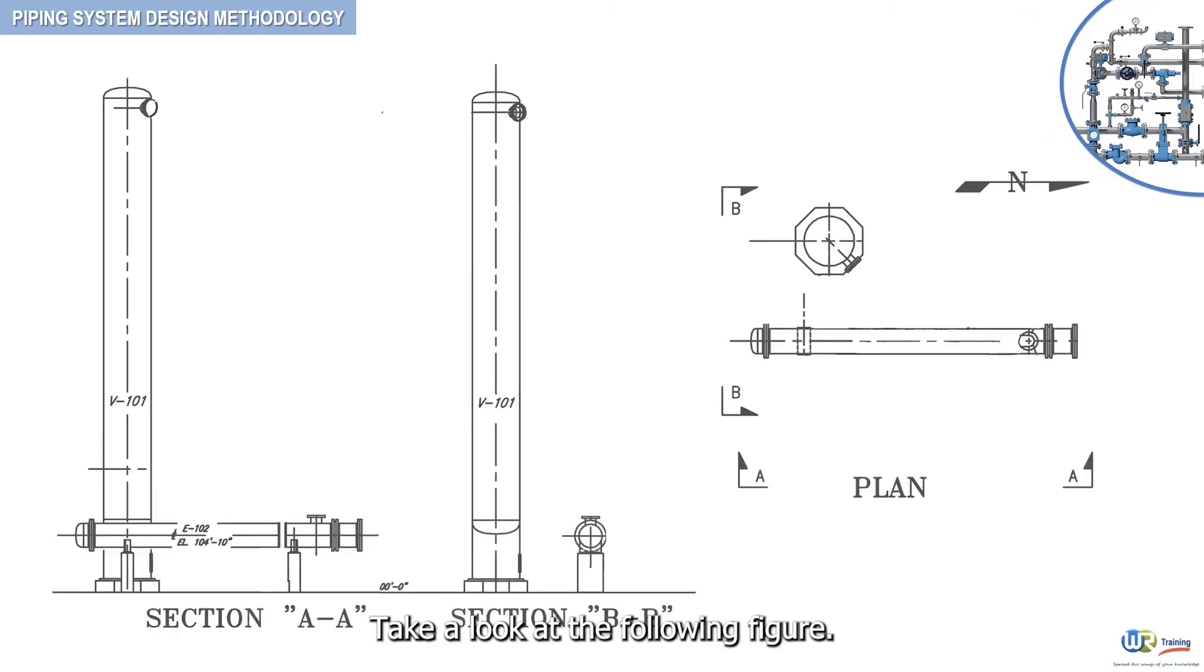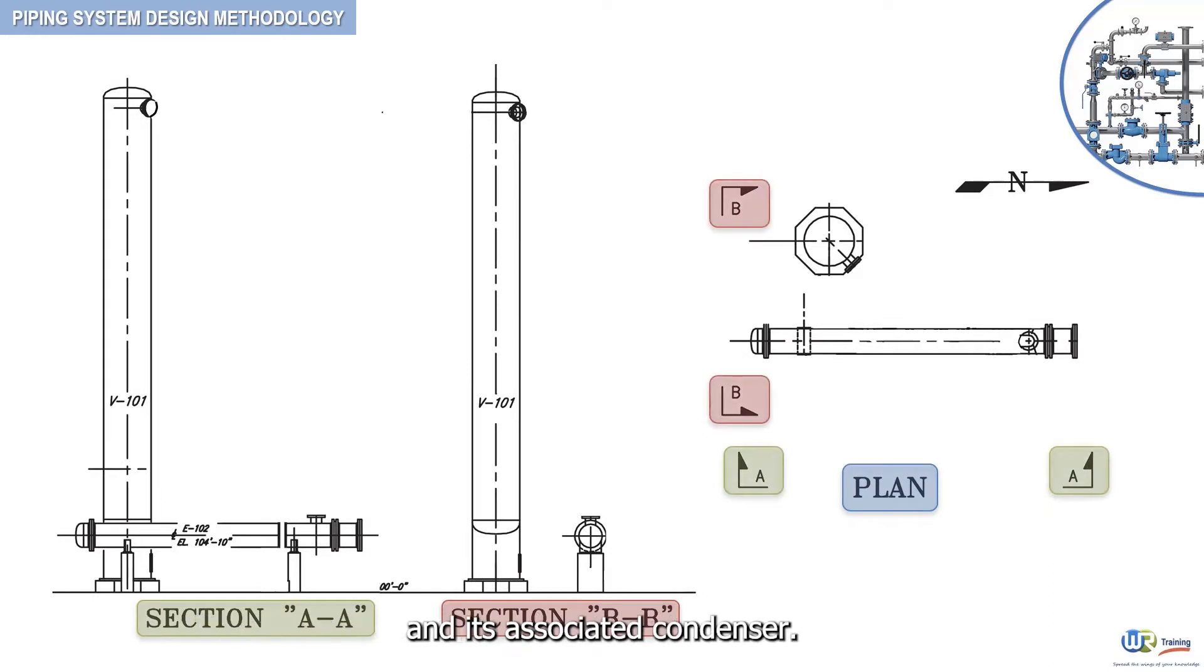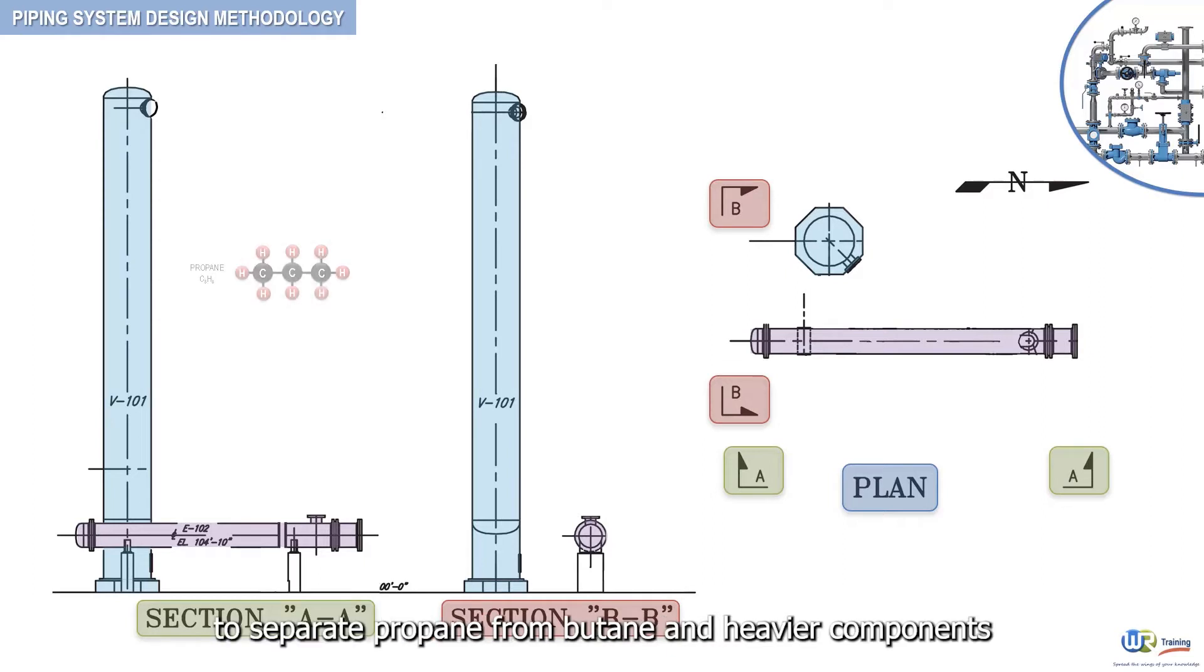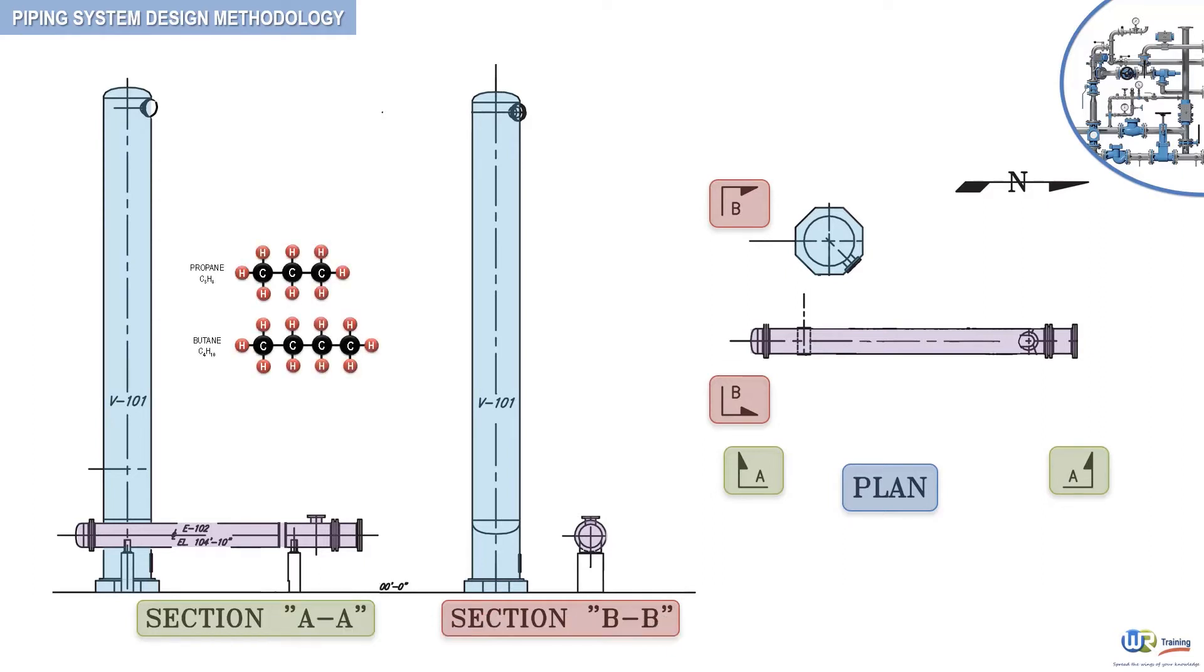Take a look at the following figure. It represents the plan and section views of a distilling column and its associated condenser. This column is used in refineries to separate propane from butane and heavier components. Butane is recovered at the bottom of the column, while propane is recovered overhead.